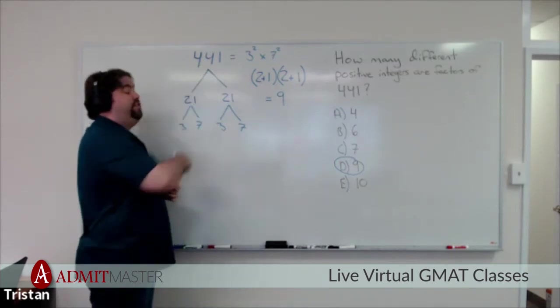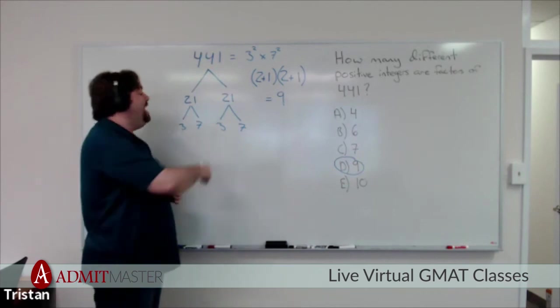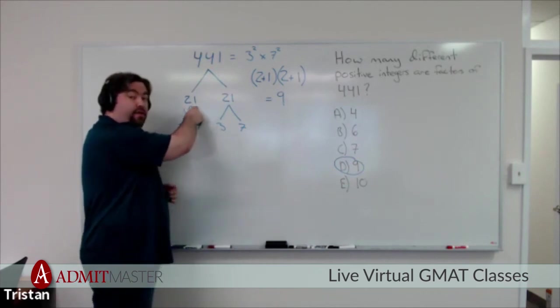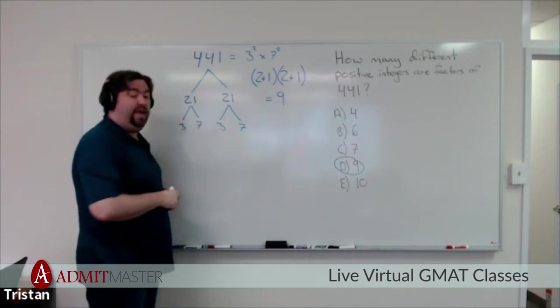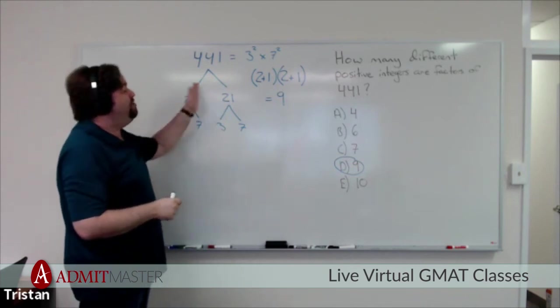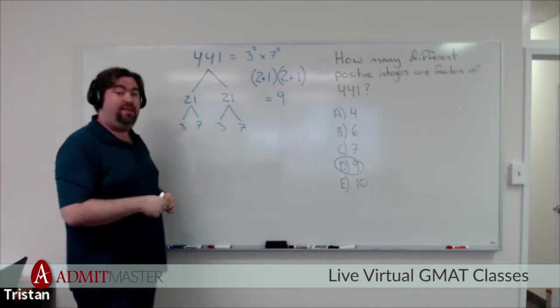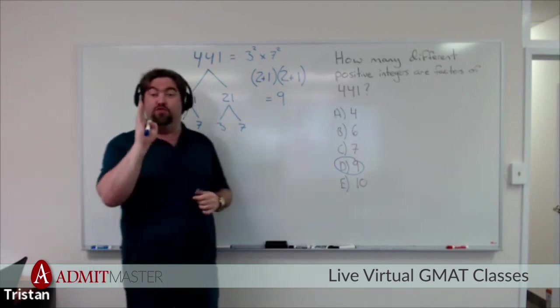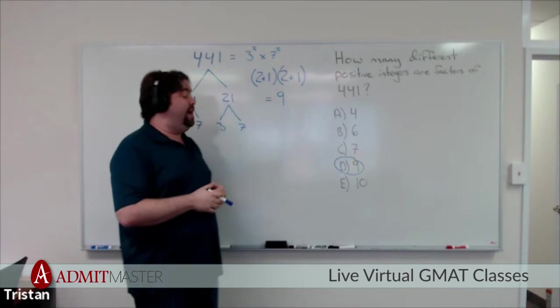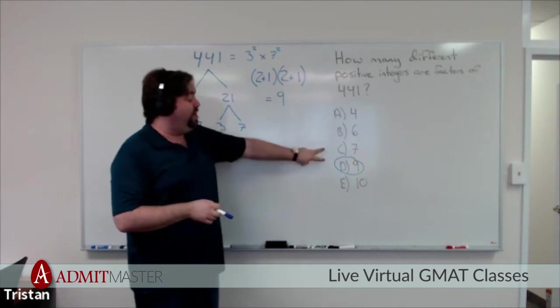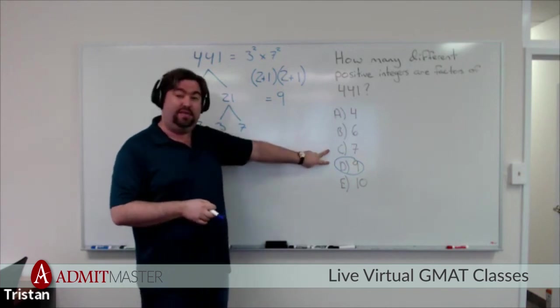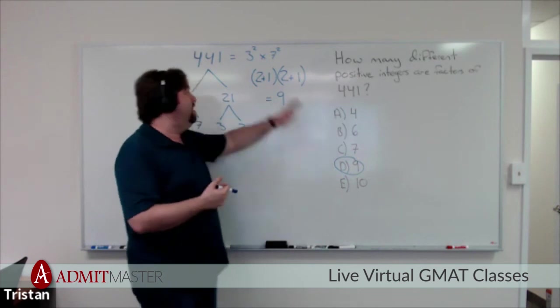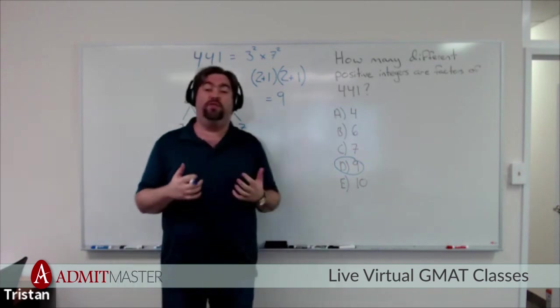21 is a factor of 441. It gets multiplied by itself, so it's not going to get double counted. In fact, that's true of all perfect squares. They will always have an odd number of factors. And if you remember that, and you have very little time to answer this question, you know the answer must be either C or D, because they're odd numbers, and 441 was a perfect square.